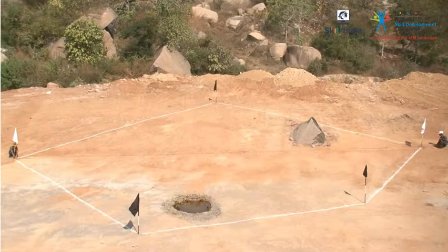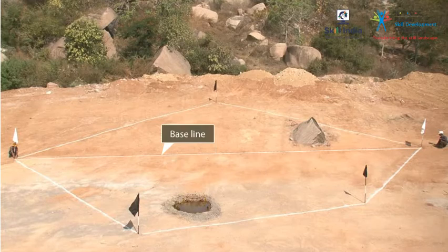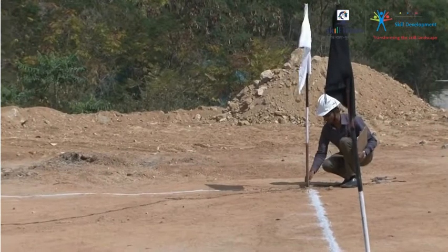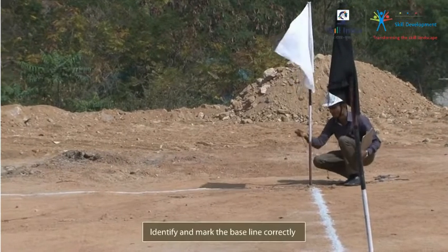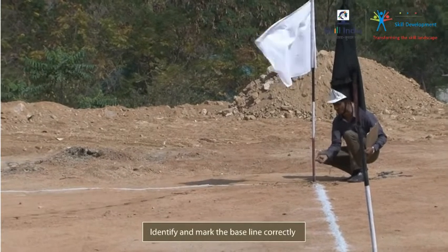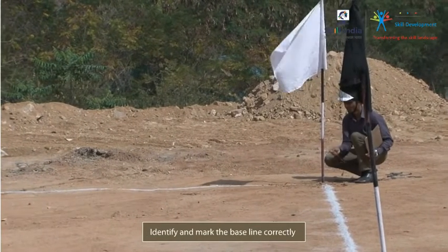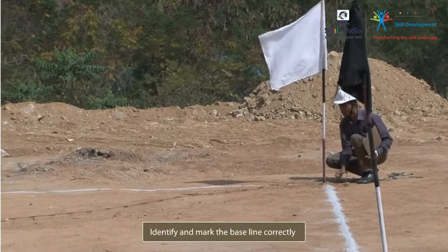When taking offsets, the survey lines we must mark on the ground are the baseline and the checklines, or the lines running to the offsets. As the baseline runs across the central region of the area, identify and mark it correctly on the ground so that you can run the checklines or the offsets from it.